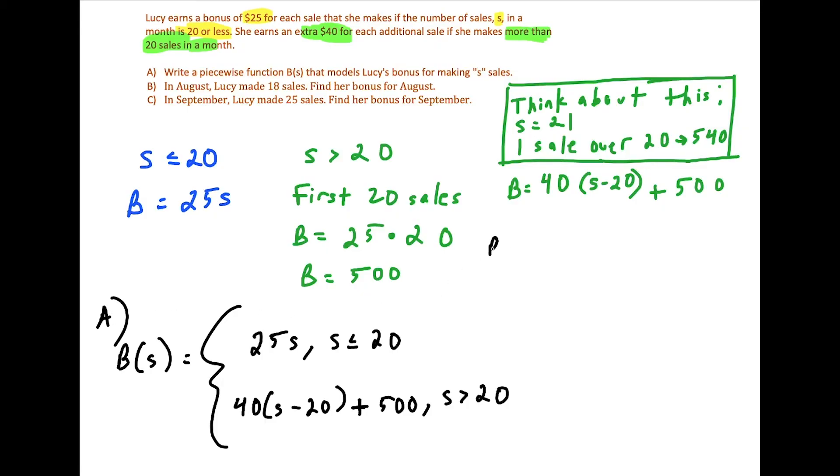And now part B and C are fairly simple because now all we have to do is plug into this formula we just created. So in August, Lucy made 18 sales. Find the bonus for August. Well, now we just plug in 18 to our function. And when we plug into a piecewise function, the first thing we have to determine is where does 18 land? Is 18 in the first or second domain. And since 18 is less than or equal to 20, we're going to plug 18 in for this part here, 25 times S, we're going to have 25 times 18. Okay, so to simplify this, we could use a calculator, or you could just do the multiplication in your head either way. But 25 times 18 is 450. So then we want to find her bonus for the month of August, that tells us here that Lucy's August bonus is $450.